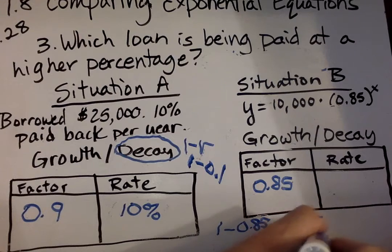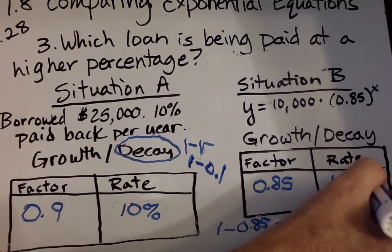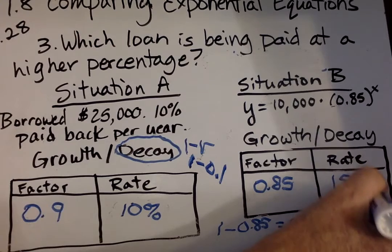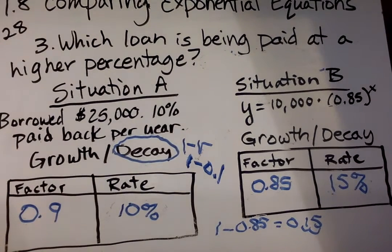Move that over two places and it's 15%. And then you're done with number 3. I'm going to have you do 4 on your own and I'm going to jump to number 5.